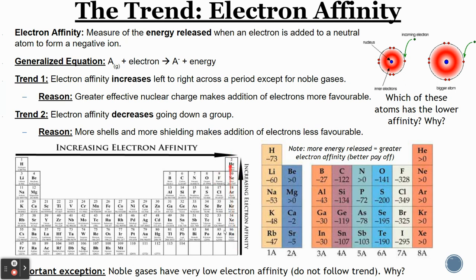The noble gases don't really count in this trend because they already have full valence shells. So let's look at something like the halogens. For our halogens, you would say that fluorine has a higher electron affinity than chlorine because it has fewer shells and is more effective at attracting that electron, compared to chlorine which has more shells and more shielding in the way to prevent an effective attraction.